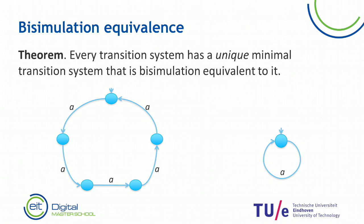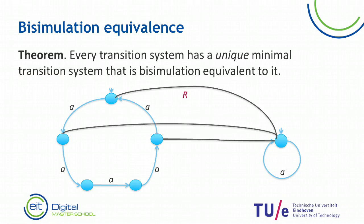This is actually the unique minimal transition system that is bisimilar to the transition system at the left. To prove this, very straightforwardly, we have to find a bisimulation relation that relates the states from the transition system at the left with the state from the right, and show that they satisfy the properties of a bisimulation relation. This is the relation: we relate all the states at the left with the single state at the right.